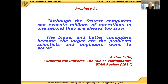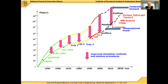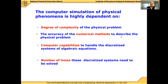This prophecy is very valid until today, as you can see in this graph showing two curves: the lower curve is the computer capability through the years, and the upper curve is the computational demand of the different problems that engineers and scientists want to solve. There is always a gap — the computational demand has always been larger than the available computational power.